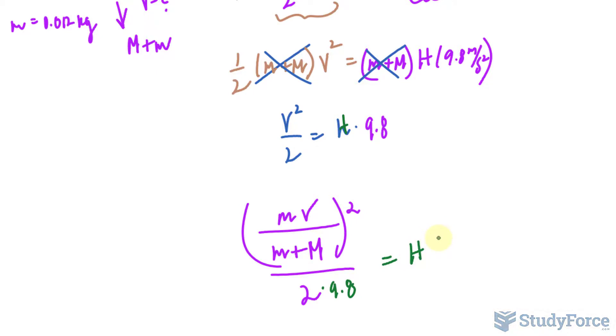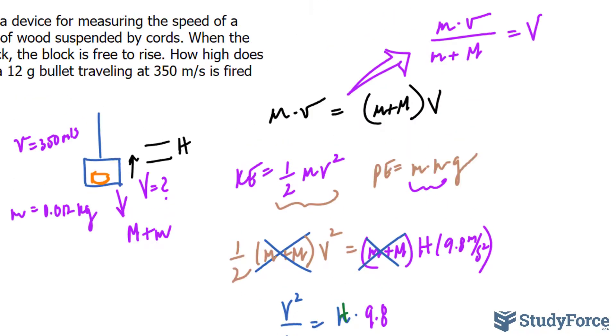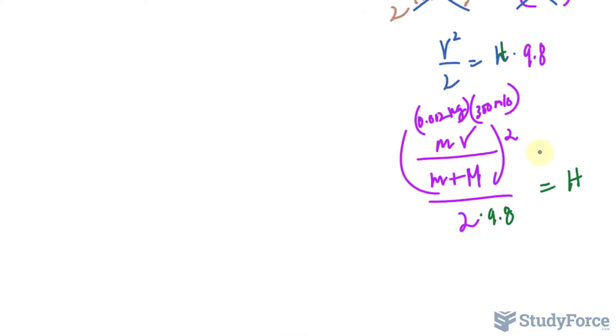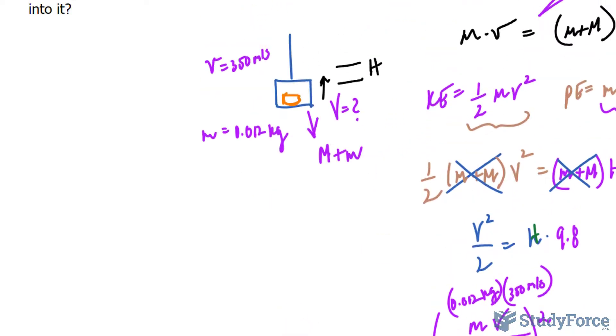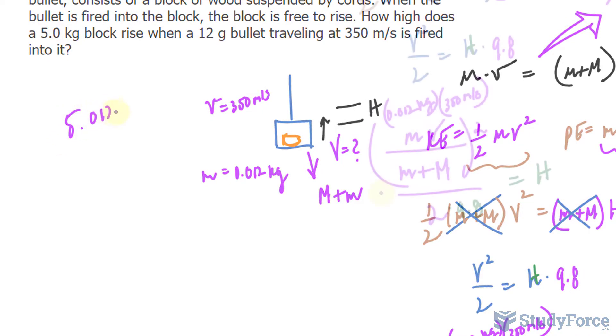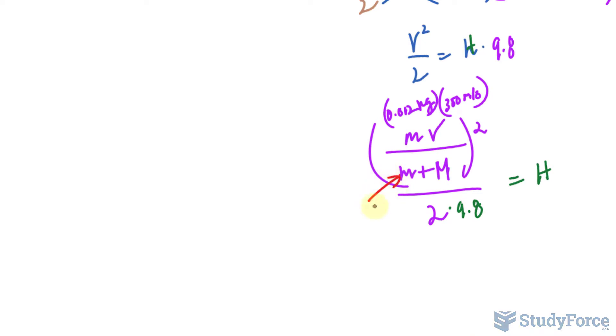We have all these values. We have little m. We were told in the question that it is 0.012 kilograms. We know its velocity, 350 meters per second. And of course, we know these two, 0.012 plus 5 kilograms, that makes 5.012. So that number right there represents this expression, 5.012.